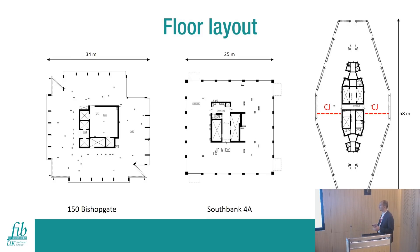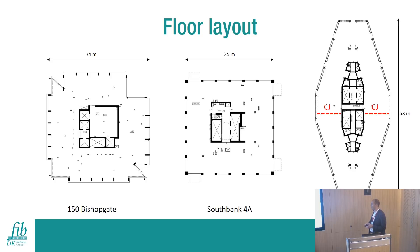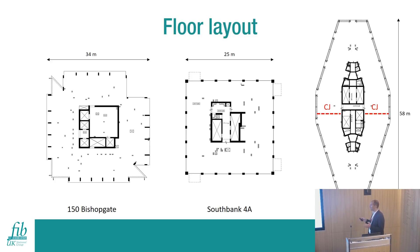I've taken three of those projects as an example. As you can see, the distribution of structural elements is very similar across all these projects. We have a central core which represents the stiff element, and an external line of supports with the PT slabs spanning in between the two. From a design point of view, this is considered a favourable layout, which means that when we apply the pre-compression to our slab, the slab is able to shrink towards the core and take almost the full pre-compression we have designed the slab for.